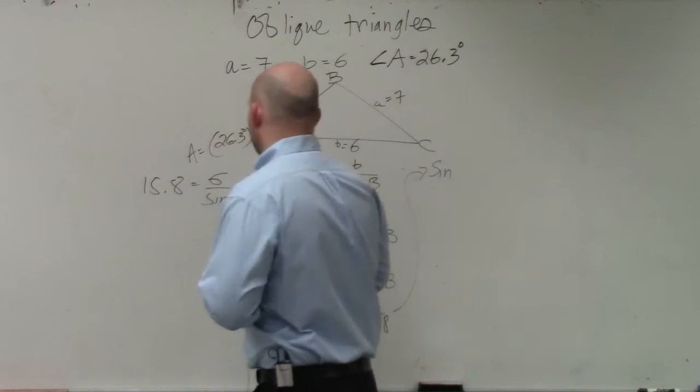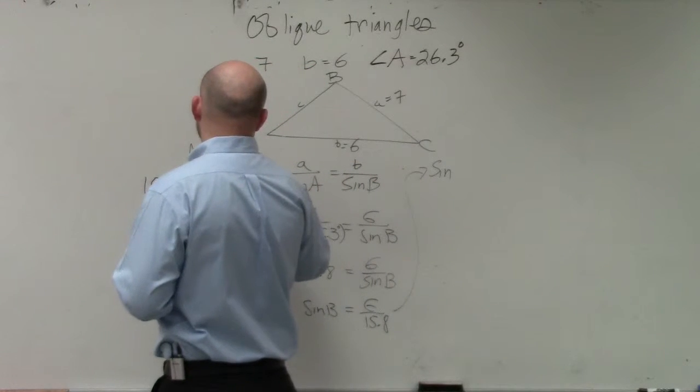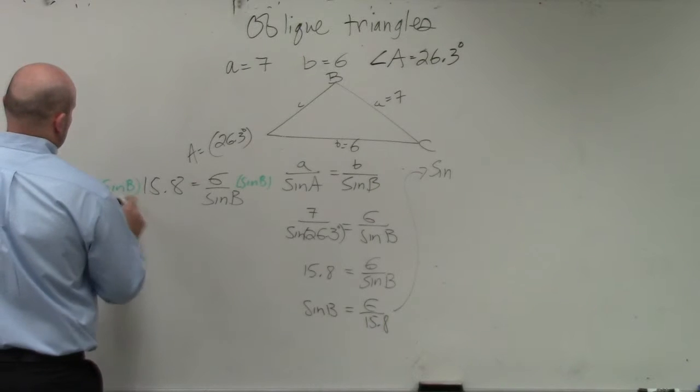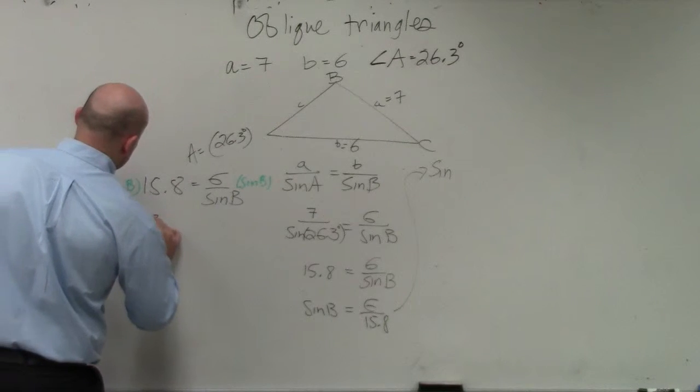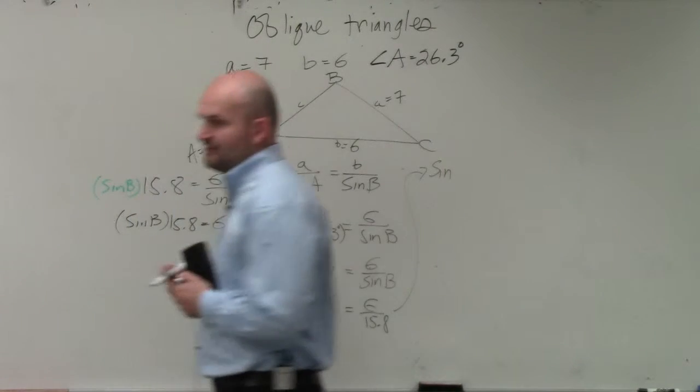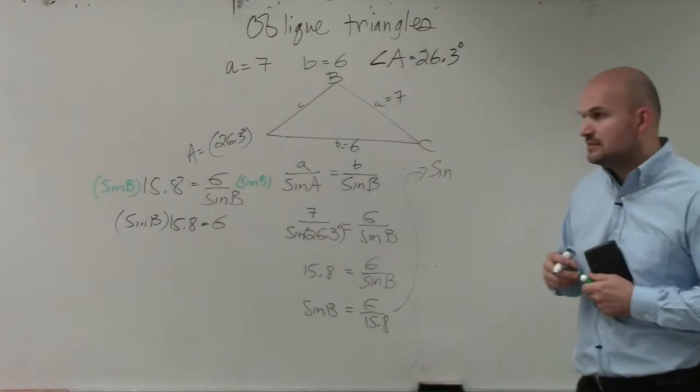All I'm doing is getting the sine of B off the denominator by multiplying by the sine of B on both sides. So therefore, I have the sine of B times 15.8 equals 6. And then I divide it by 15.8 on both sides. Does that make sense?